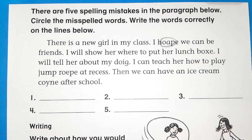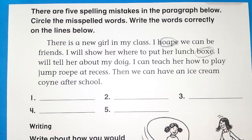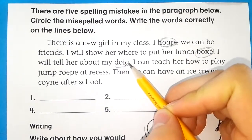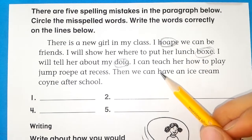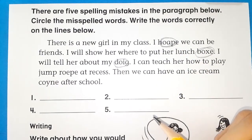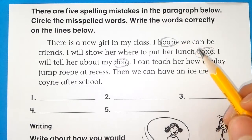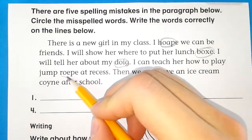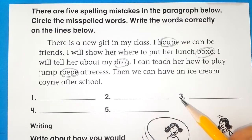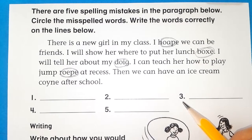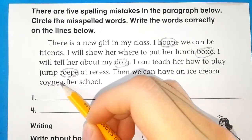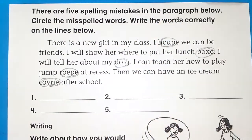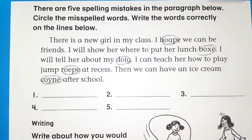점심 도시락을 어디에 놓을지 보여줄 것이다. I will tell her about my dog. 나는 내 개에 대해서 알려줄 것이다. I can teach her how to play jump rope at recess. 나는 쉬는 시간에 줄넘기 하는 방법도 알려줄 것이다. Then we can have an ice cream cone after school. 우리는 아이스크림 콘을 학교 끝난 뒤에 같이 먹을 수 있다. 참 좋은 친구들이네요.